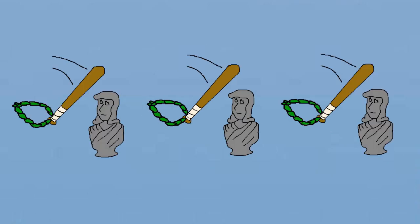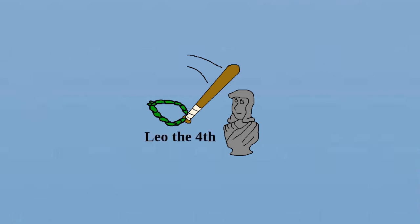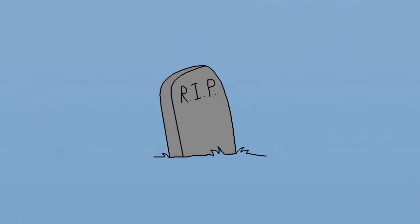There were multiple iconoclast emperors, with some being absolutely brutal to those who held onto and revered holy icons, but not all of them were, and one, Emperor Leo IV, was very lax in his enforcement of iconoclasm until the day he died.